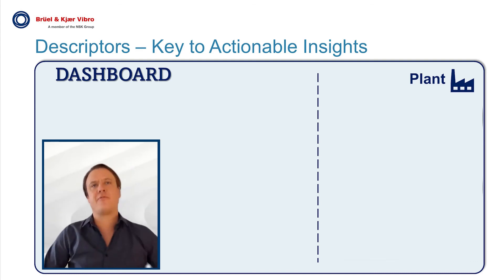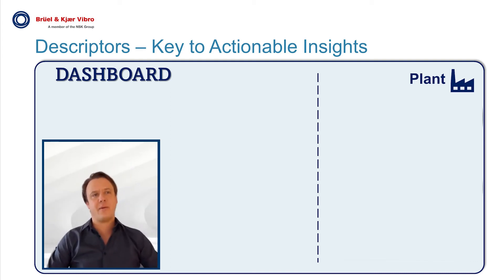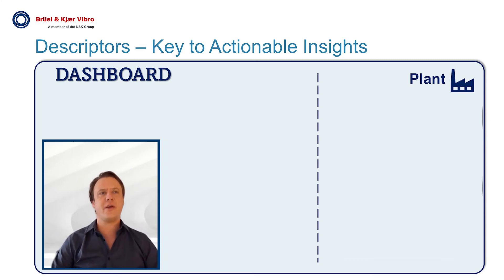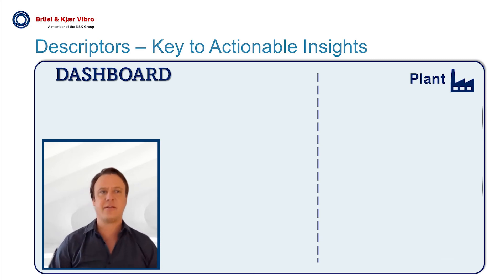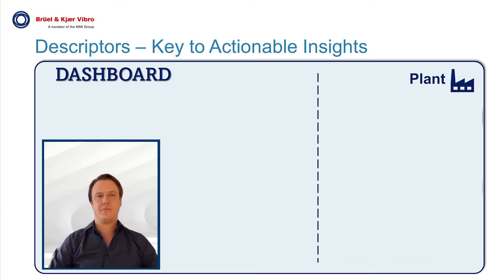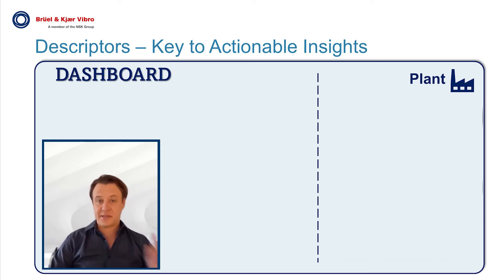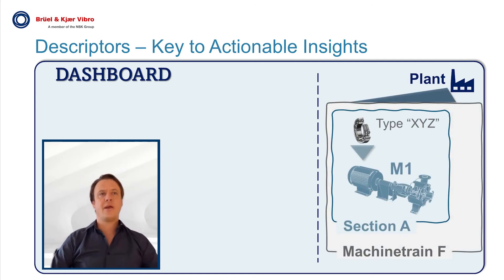the descriptor for the outer ring fault of the rolling element bearing, showing how our trend guides the actions of the maintenance staff. Imagine you look at your dashboard and the message comes up — understandable for everybody: 'Rolling element bearing type REB XYZ in location